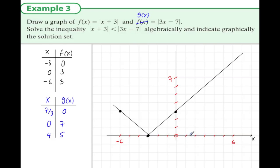Now we're going to graph g(x). I'm going to use blue for this function. We have (0, 7), (7/3, 0) - now 7/3 is 2 and a third - and we have (4, 5).